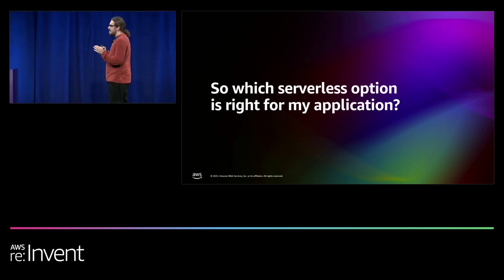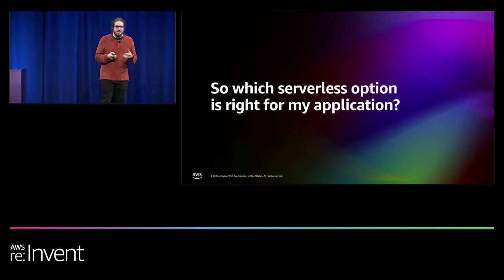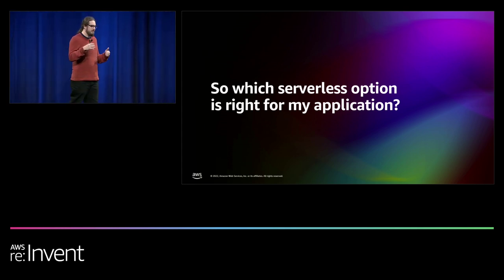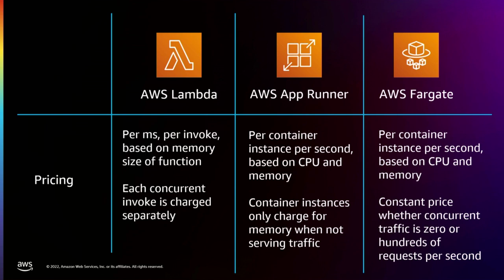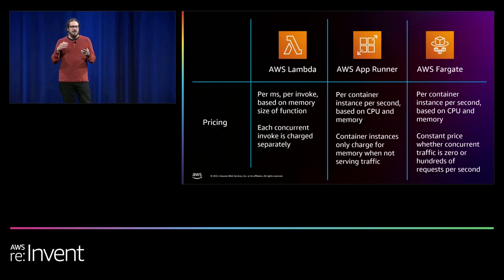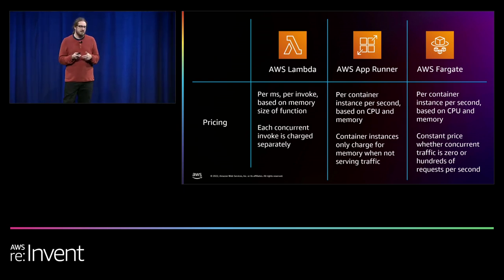Now let's balance efficiency versus ease and compare the three options. With AWS Lambda, the pricing model is pay per millisecond per invocation based on the function's memory size, and every concurrent invocation is charged separately. With AWS AppRunner, pricing is per second based on CPU size and memory size. AppRunner optimizes down to charging only for memory when there's no traffic, then charges a flat rate for CPU when traffic arrives — no matter how much traffic hits that container.